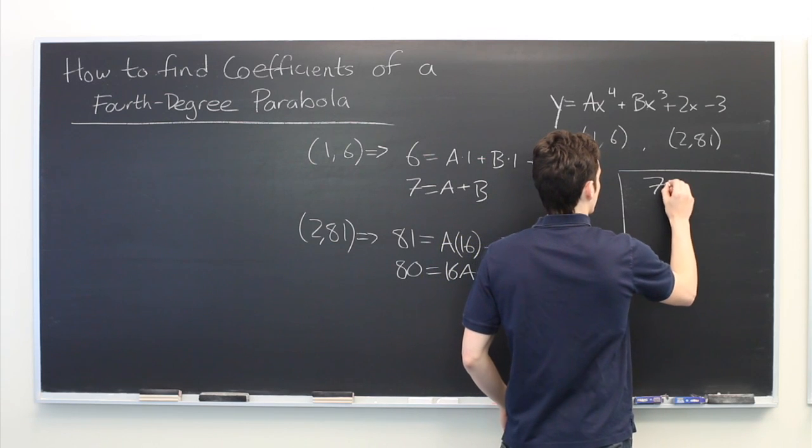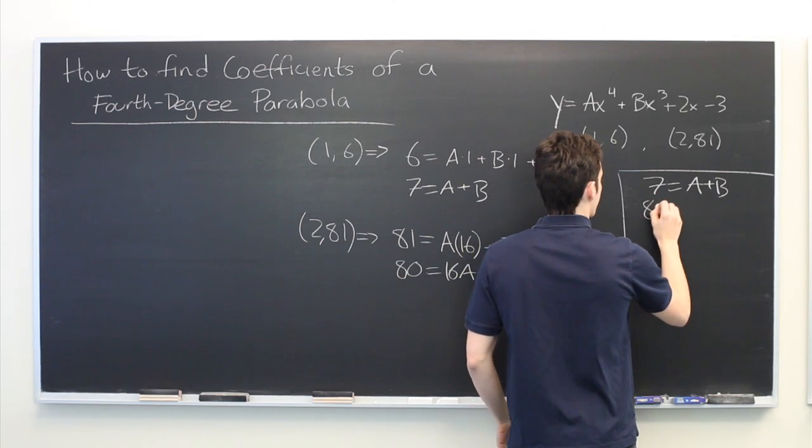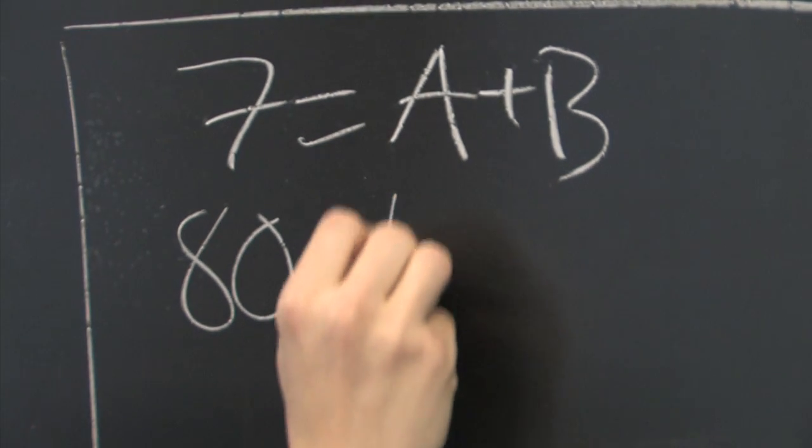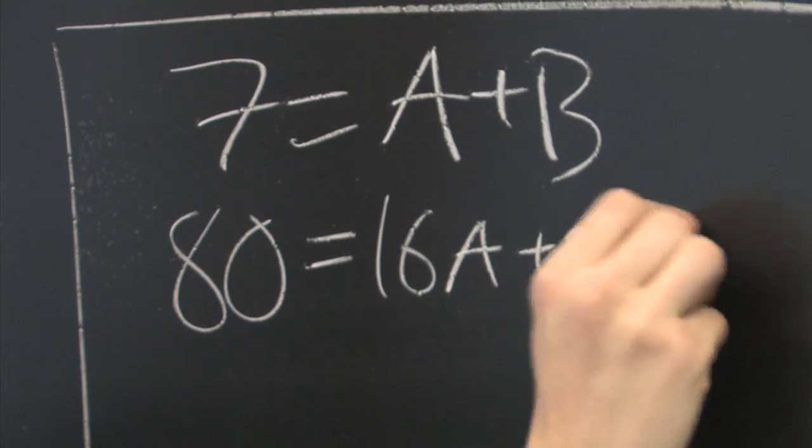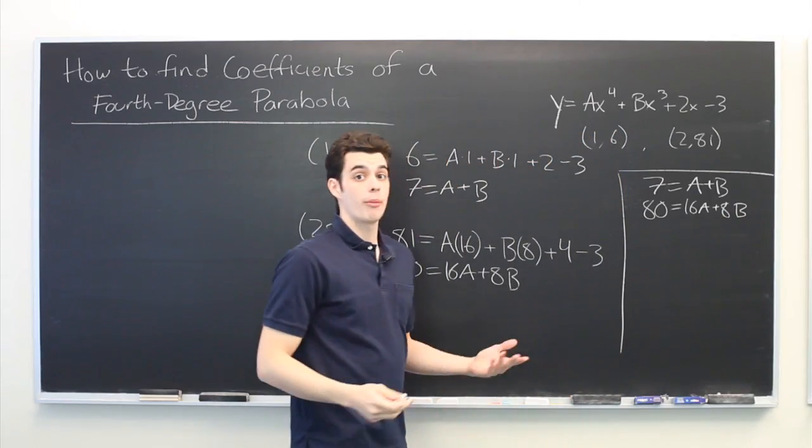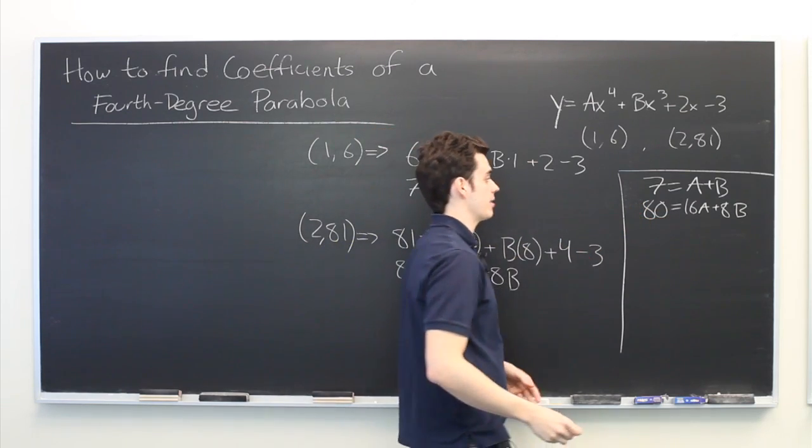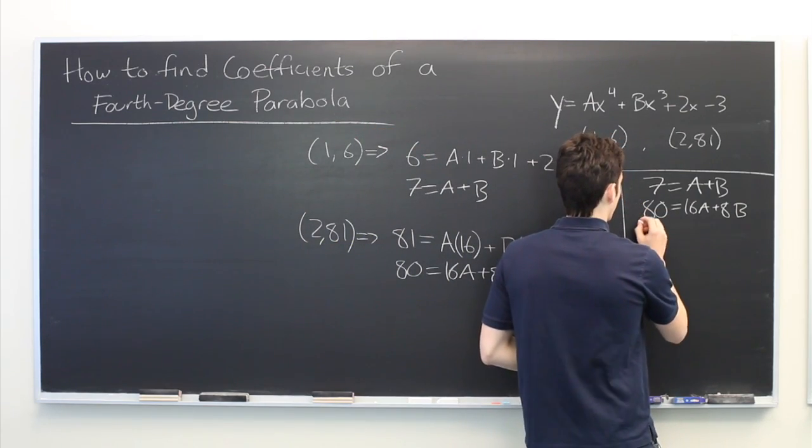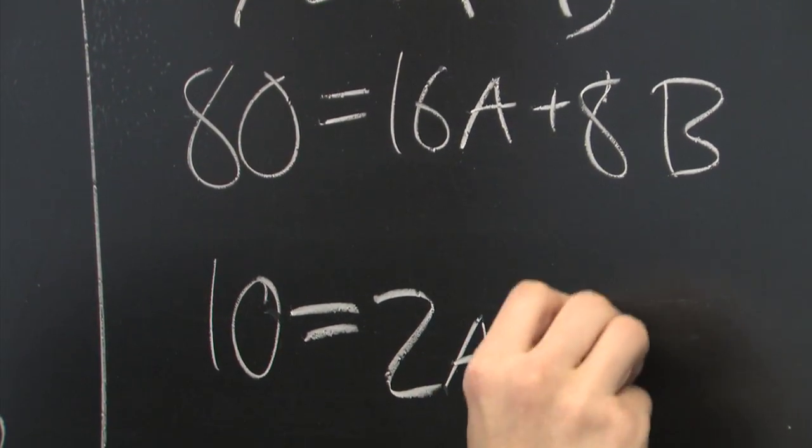We have seven equals a plus b. And we have eighty equals sixteen a plus eight b. Well, right off the bat we can simplify this equation a little bit further by simply dividing through by eight. And what we get ten equals two a plus b.